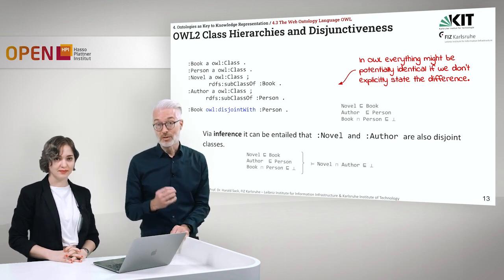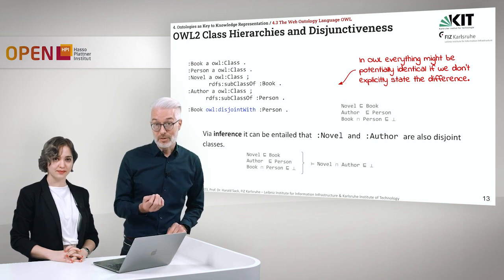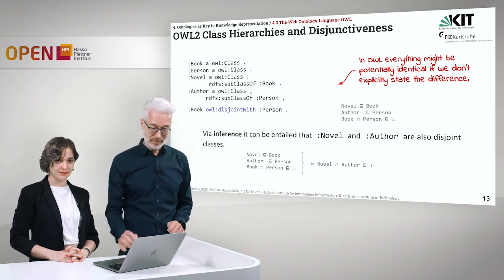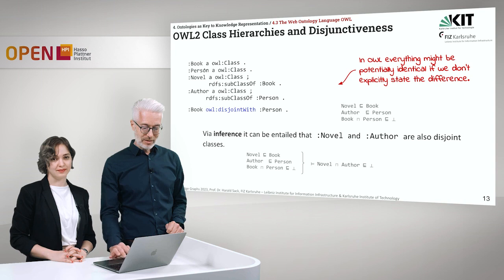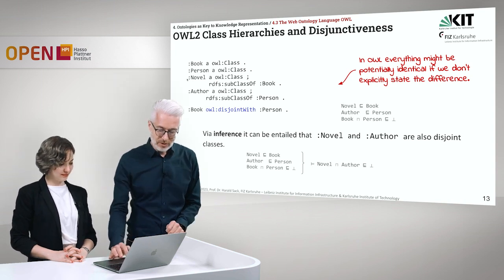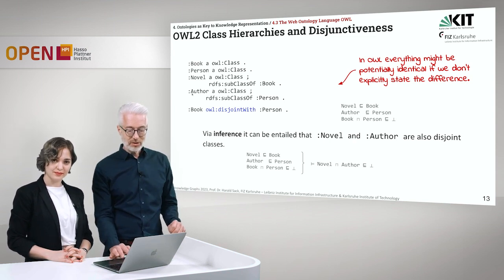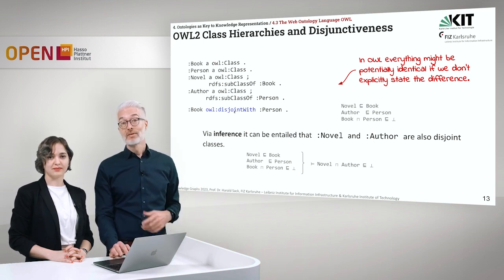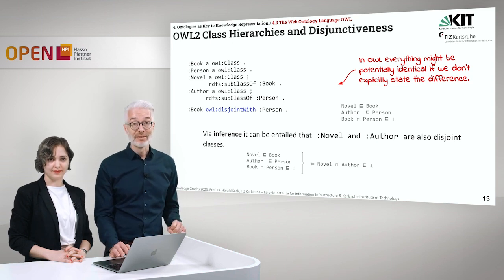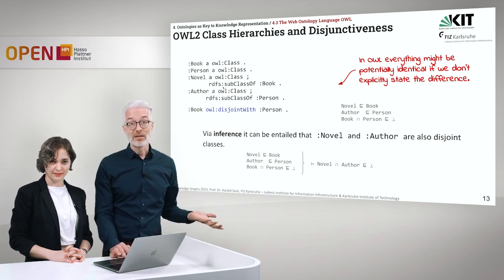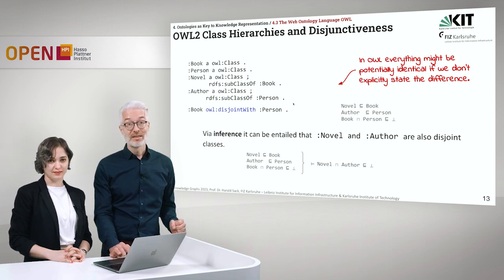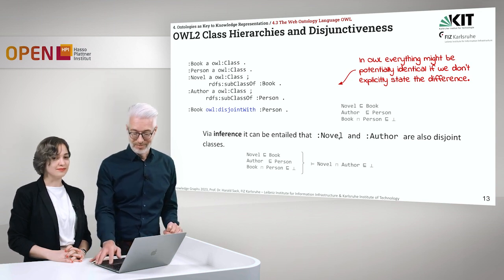In addition to class hierarchies, OWL2 allows us to define classes as disjoint — something we were not able to do in RDFS. For example, Book is defined as disjoint with Person using owl:disjointWith, so Books and Persons cannot overlap. Since Novel is a subclass of Book and Author is a subclass of Person, via inference it can be entailed that Novel and Author are also disjoint classes.